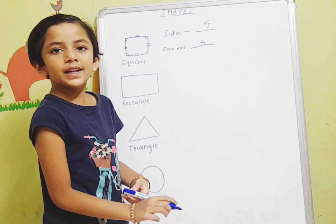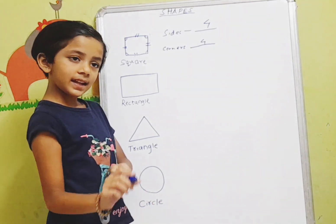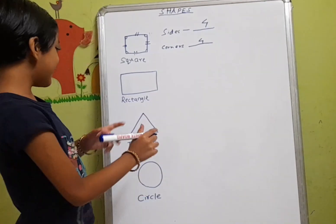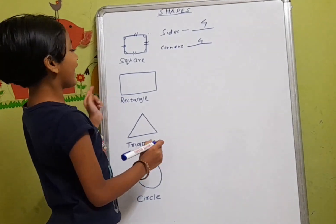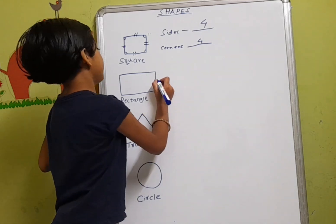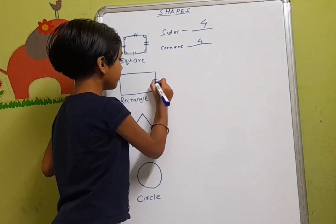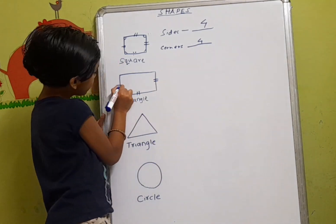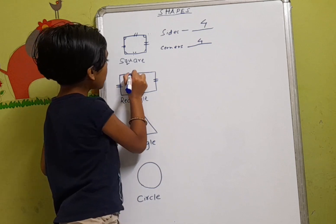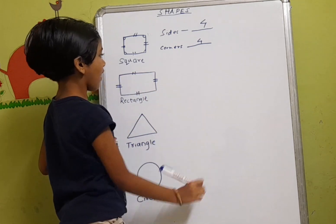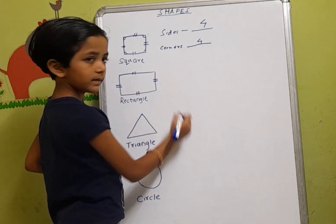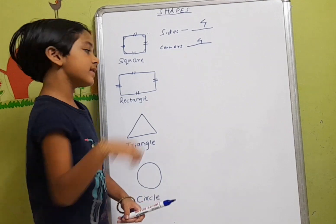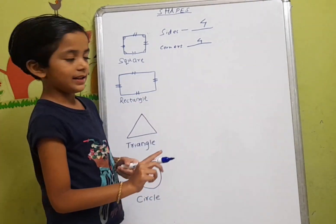Now let's see another diagram. This is a rectangle. One, two, three, four. There are four sides in a rectangle.